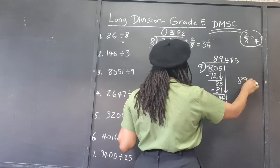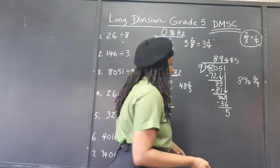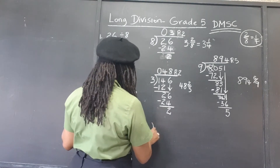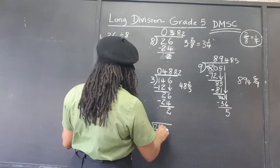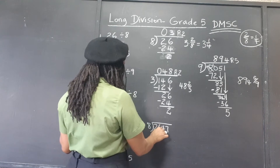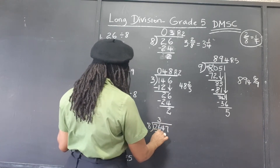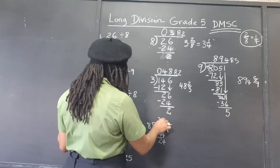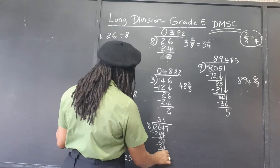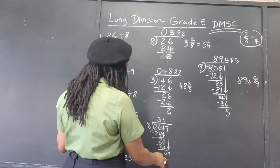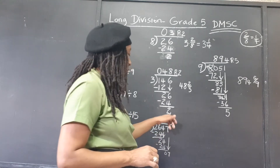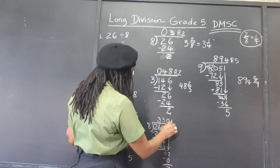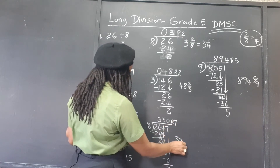41 take away 36 gives a remainder of 5. So the answer is 894 remainder 5, or 894 and 5 over 9. Our fourth problem: 2647 divided by 8. Eight into 26 goes 3 times; 3 times 8 is 24; subtract, remainder 2. Carry down the 4 to get 24. Eight into 24 goes 3 times exactly; subtract, remainder 0. Carry down the 7. Eight goes into 7 zero times, so we must put a 0 to hold that place; 0 times 8 is 0; subtract, remainder is 7. Answer: 330 and 7 over 8.